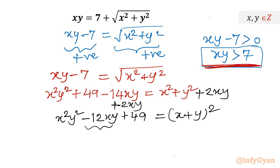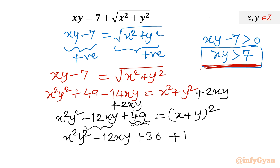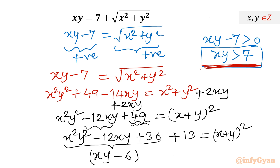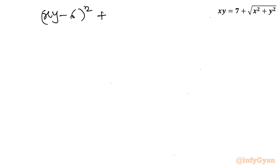Observing the left-hand side, the term −12xy is of the form −2ab where a = xy and b = 6. So let me split 49 into 36 + 13, giving x²y² − 12xy + 36 + 13 = (x + y)². The first three terms form a perfect square: (xy − 6)². So we have (xy − 6)² + 13 = (x + y)².